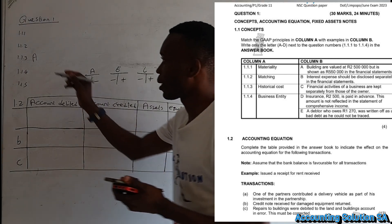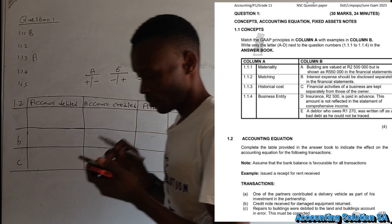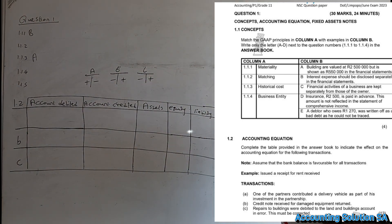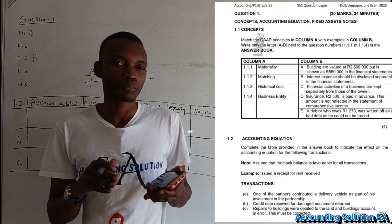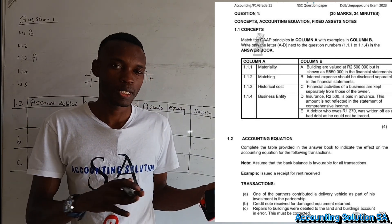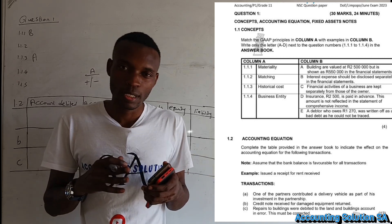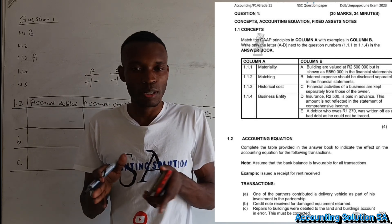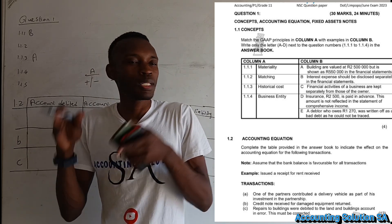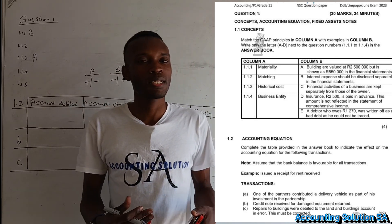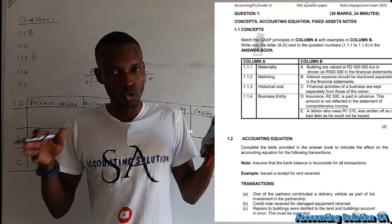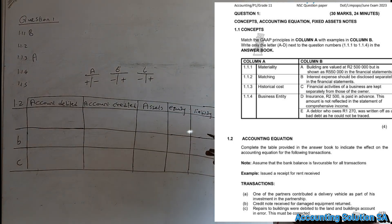Number C says: financial activities of a business are kept separately from those of the owner. In other words, when we prepare financial statements, we don't include the property of the owner — this is the business entity principle. Business entity says that whenever we talk about a business, we must talk about the business only. Even if the owner has a BMW or many other assets, we do not include them in the business. We have to separate those two, so number C falls into number 4.